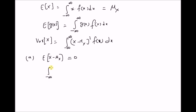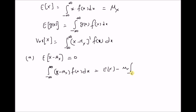The integral from minus infinity to plus infinity of (x minus μx) f(x) dx equals the expectation of x minus μx. Since μx is a constant, we have the expectation of X minus μx times the integral of f(x) dx, which equals 1 since it is the total probability. Therefore, the expectation of (X minus μx) is equal to 0.